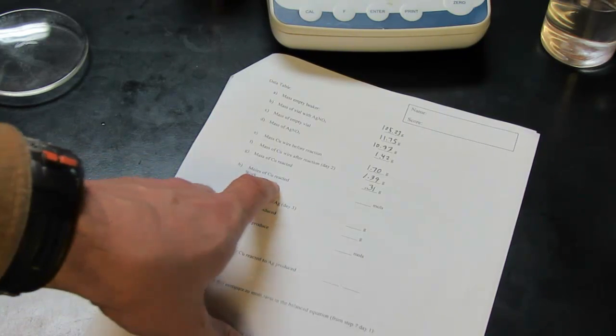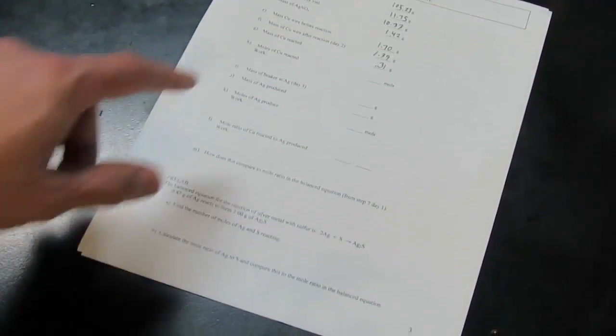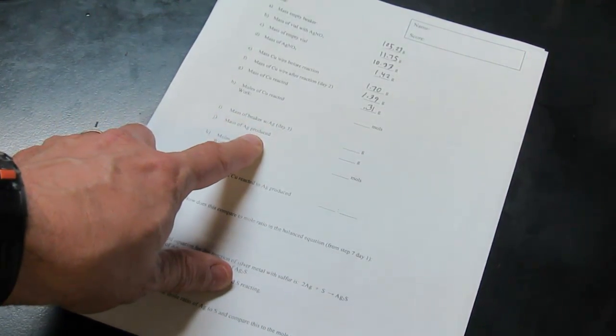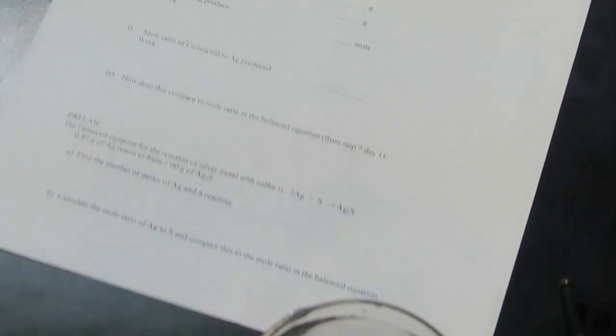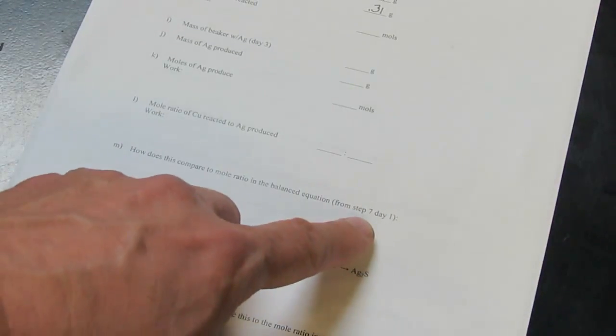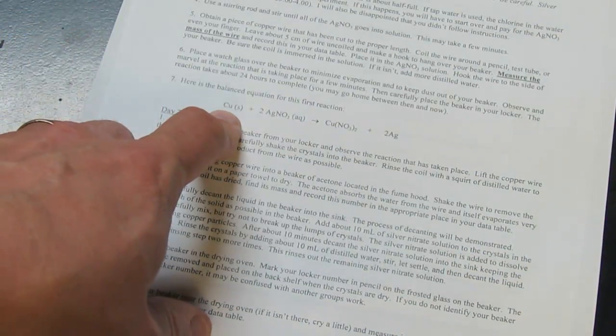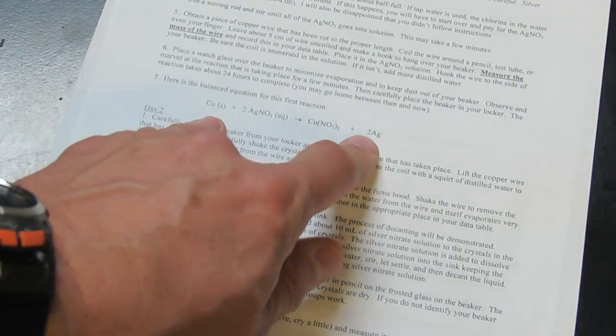And then of course we can convert that to moles of copper that reacted. And then when we come back next time we'll be able to find the mass of the beaker with the silver in it. And after that we'll be able to find the amount of silver that was produced and convert that to moles. And we're going to get a nice pretty mole ratio. And we're going to compare that mole ratio to the balanced equation from step seven in day one. The balanced equation should say one mole of copper reacts for, or produces two moles of silver. So we're going to see if we get that one to two mole ratio.